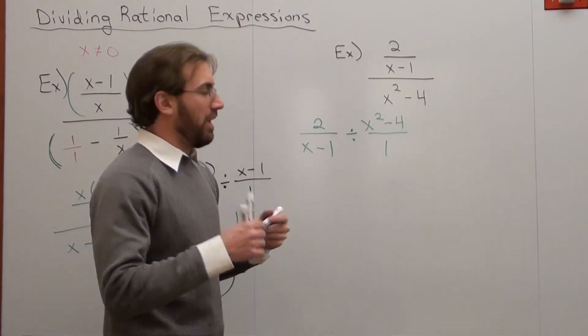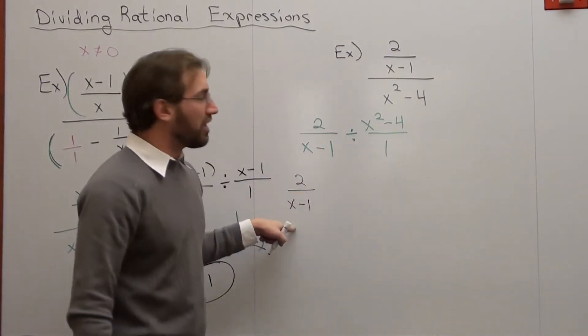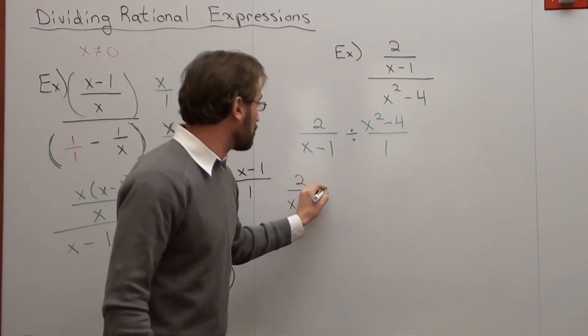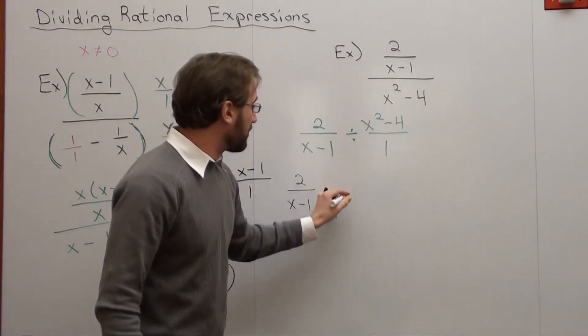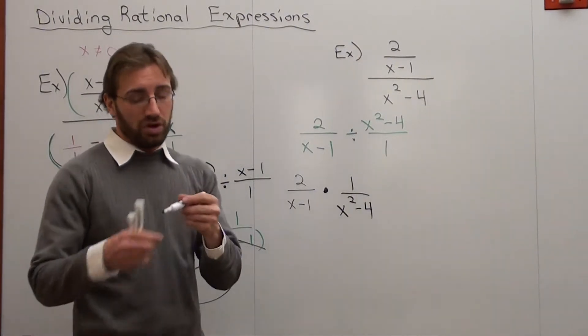Now, let's work our magic here. 2 over x minus 1. Division turns to a multiplication. Flip the fraction. 1 over x squared minus 4. Almost done.